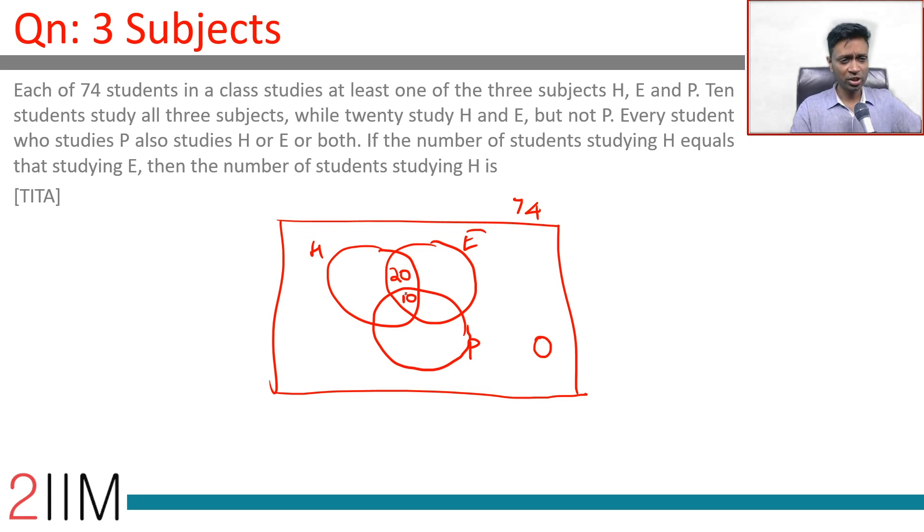Every student who studies P also studies H or E or both. So every student who studies P should either be here or here or here. There is no standalone P. This goes to 0.